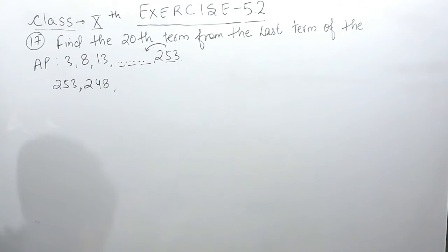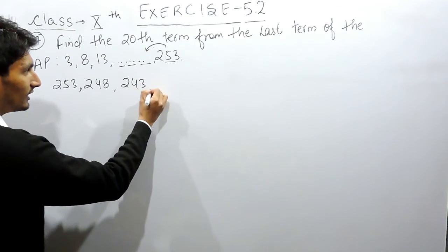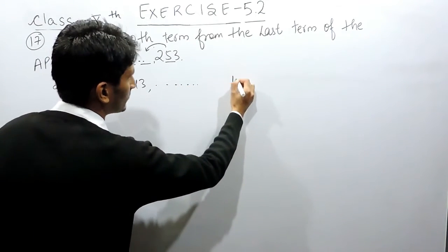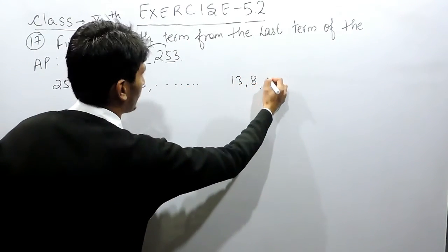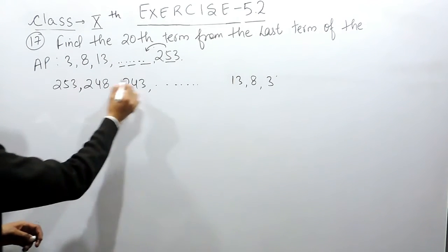The series will be 13, 8, and 3. The series will be like this. So you have to find the 20th term from the last, means this will act as first term, this is second, third, and so on.